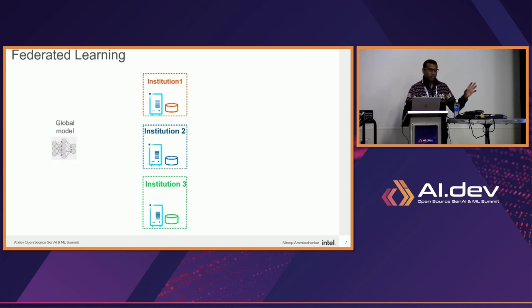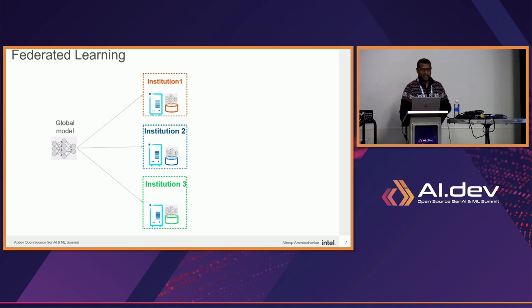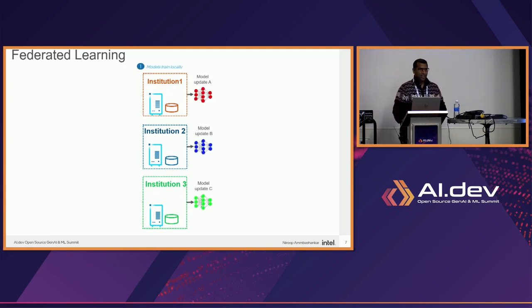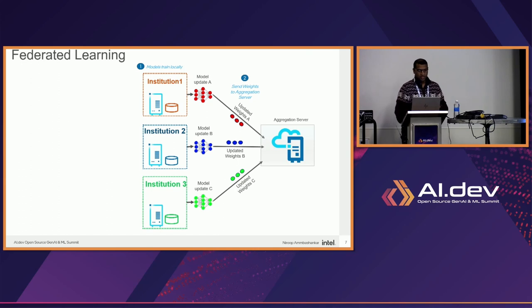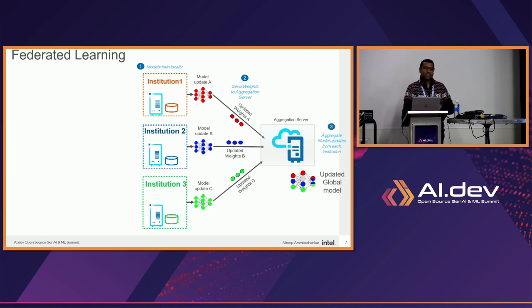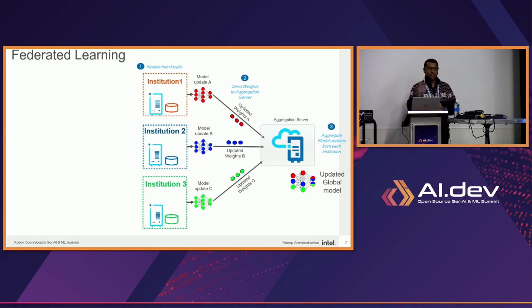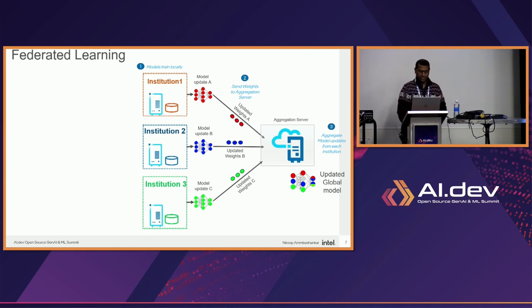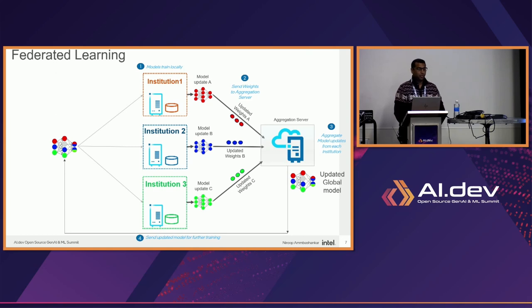Let's reverse the paradigm in federated learning. You start with institutions and a global model. You send the model to each institution — you don't move the data, you send the model. Then you train the model locally. Data stays private. You send only the weights back to a central aggregation server. That aggregation server performs some kind of weighted average — there are several algorithms for this aggregation on the weights alone. You get an updated global model, send it back to other institutions, and repeat the loop until training is complete.